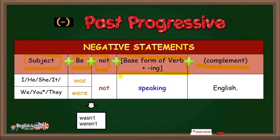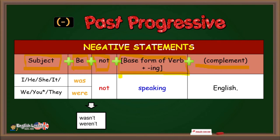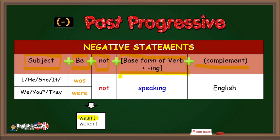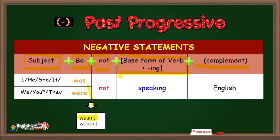We can use the short forms. For example, wasn't instead of was not, or weren't instead of were not.